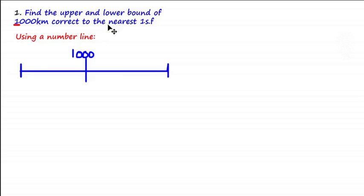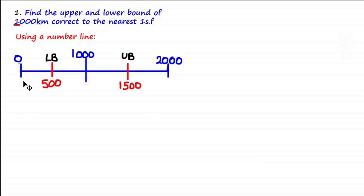Adding 1 to the first significant figure gives us the next value up: 2,000. Subtracting 1 gives us the next value down: 0. Taking the midpoints gives us a lower bound of 500 and an upper bound of 1,500.